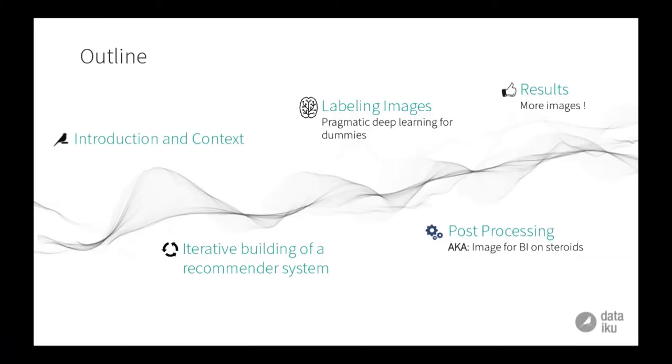I want this talk to be really applied. It's going to be an applied introduction to some of the other talks that you're going to see later, for example the one from Olivier about Recommendation Engines. I'm going to start with setting up the context of the project, then talk about how to iteratively build a Recommendation Engine, starting from simple ones to more advanced techniques, and then we are going to dive into how to label images.